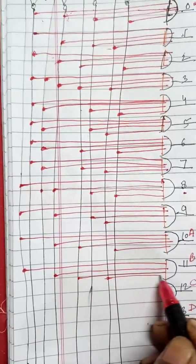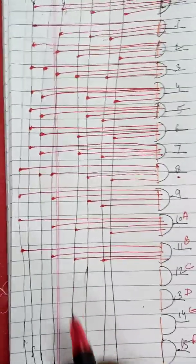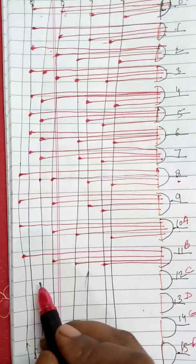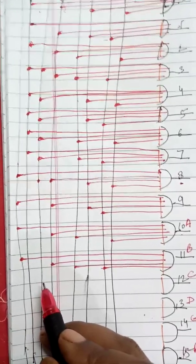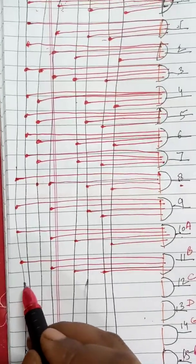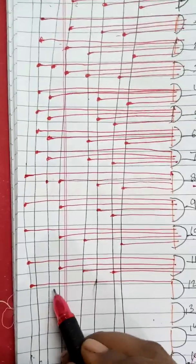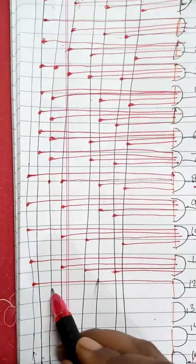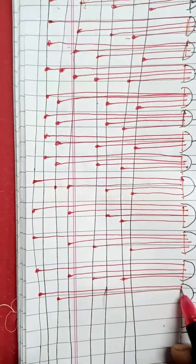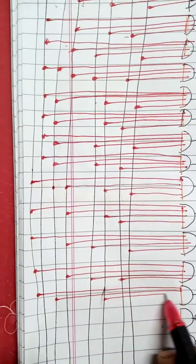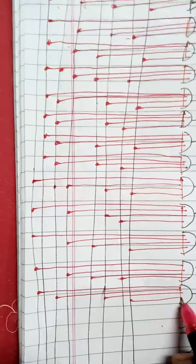For C, the binary equivalent will be 1100, so you will be connecting to these input lines: 1, 1, then 0, 0.